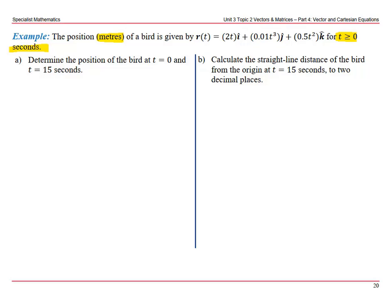So first, when t is zero, we want the vector when t is zero, and if we plug zero into that vector equation, we get 0i plus 0j plus 0k, which means the bird starts at the origin.